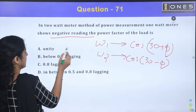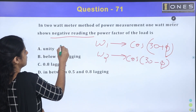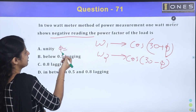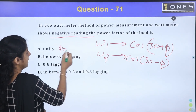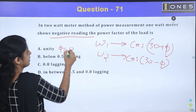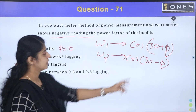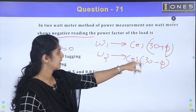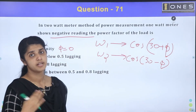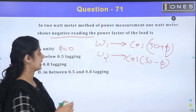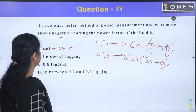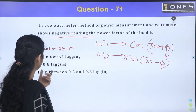Let's eliminate the options. Unity power factor means cos φ equals 1. If cos φ equals 0, then both watt-meter readings are equal. So unity power factor is not the option here.